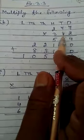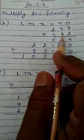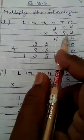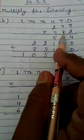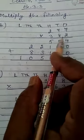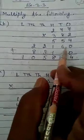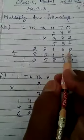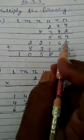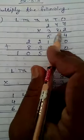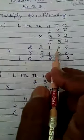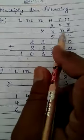Now 80 — 8 is at tens place, so we will multiply by 8. When we multiply by the tens place number, we will put 0 at ones place, then we start multiplying and putting the number from the tens place.